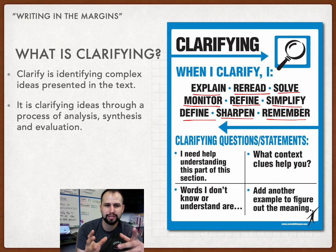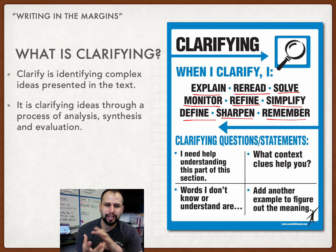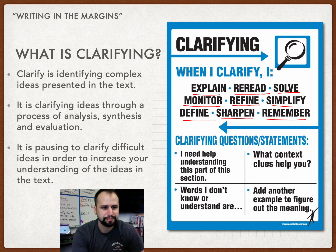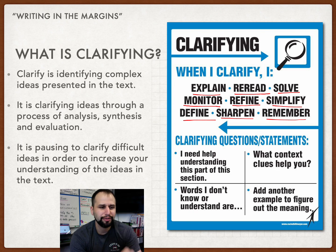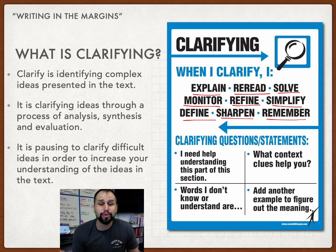When you come across something confusing, you reread it, try to refine your thinking, maybe simplify it, and then evaluate: did I really get this right? Do I really understand? It's pausing — stopping your reading to clarify different ideas in order to increase your understanding of the whole text or multiple ideas in a text.